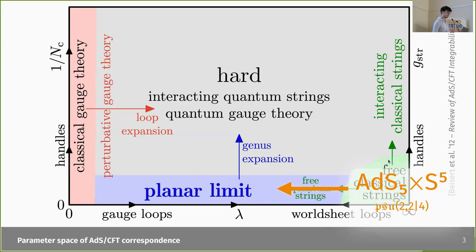As you go to the center, we go to the quantum theory. The quantum theory is kind of connecting the two classical theories on both sides. The y-axis is the number of colors in the Yang-Mills theory or the number of handles in the string theory. I'm going to focus on the lower part where the number of colors is infinite — the planar limit, with no string interactions at all, so we have a free string.